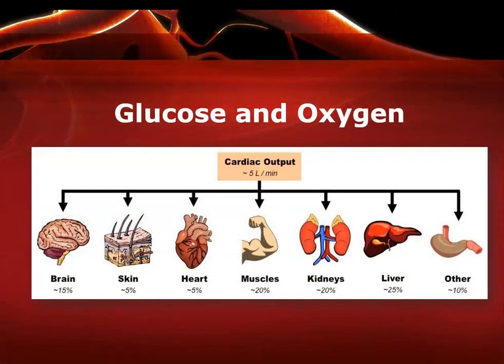Your brain does not have the ability to store glucose as other parts of your body can, so it relies heavily on adequate perfusion or blood flow to get the oxygen and glucose to the brain cells necessary to make ATP for cell health. Without either of them, cell death can occur very rapidly. Your brain alone requires about 15 to 20% of the total cardiac output to maintain its needs for adequate energy production. It also uses up approximately 25% of the total body glucose supply.